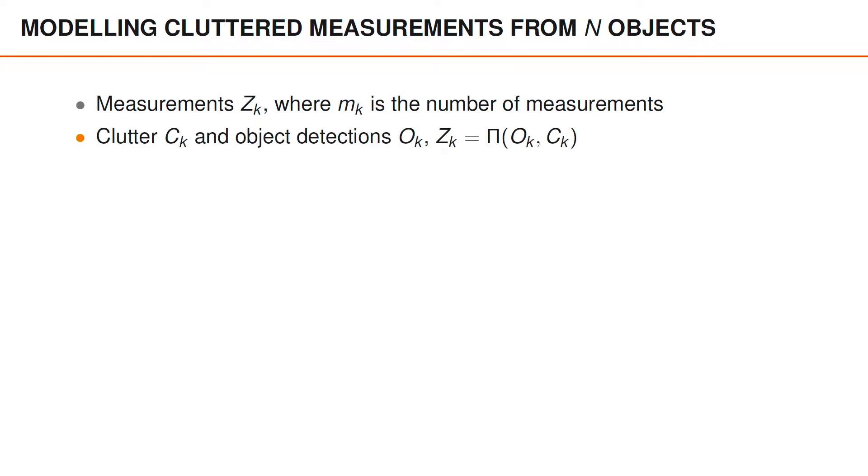The measurements consist of both clutter and object detections, and the clutter we denote like before by capital C, and the object detections by capital O. And similarly to single object tracking, the measurements are a random permutation of the columns in the two matrices O and C.